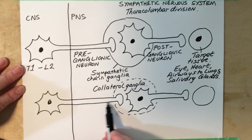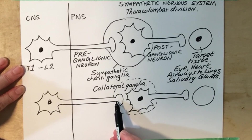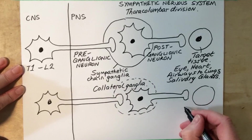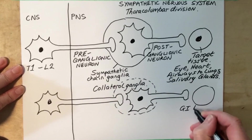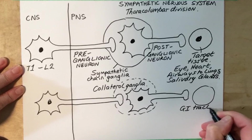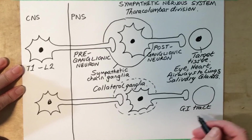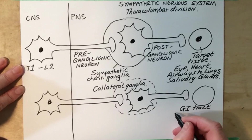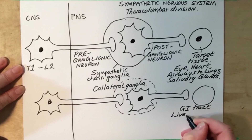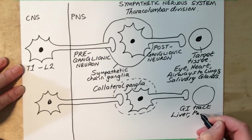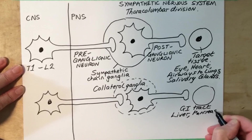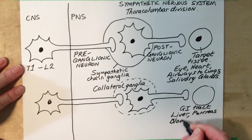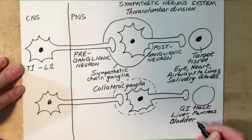In pathways that run through the collateral ganglia and synapse here, the target tissues include the GI tract, as well as accessory organs to the digestive system such as the liver and the pancreas, and also the bladder and genitals.